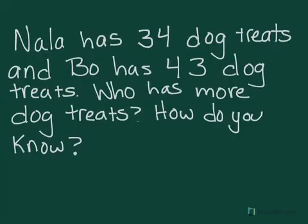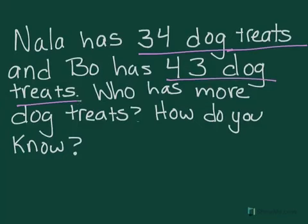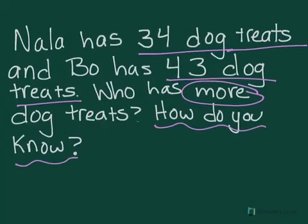In this problem we can see that Nala has 34 dog treats and Bo has 43. The question is asking who has more and also how do you know? Let's look a little closer.